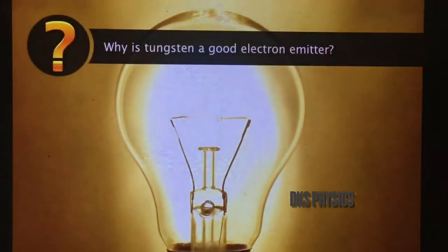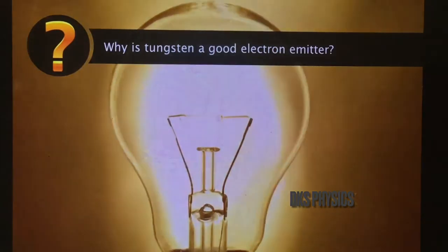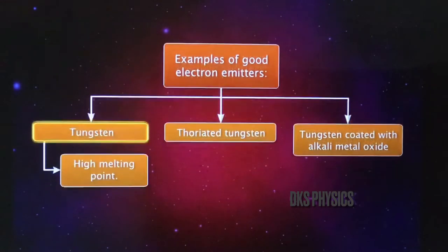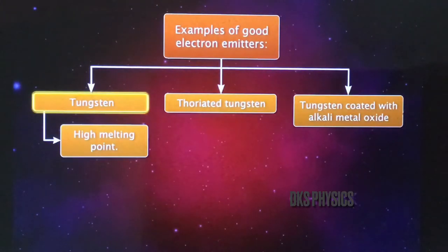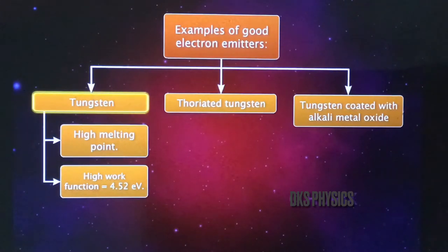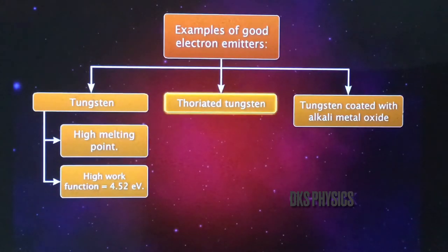Why is tungsten a good electron emitter? Tungsten has a work function of 4.52 electron volts. Hence it needs to be heated to a very high temperature of 2500 kelvin for it to emit electrons.